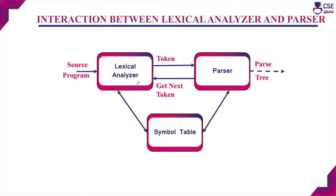Next, the interaction between the lexical analyzer and the parser. The lexical analyzer accepts the source program, reads input characters, groups them into lexims, and produces tokens by comparing lexims with patterns. The parser sends a call — 'get next token' — to the lexical analyzer. Once the lexical analyzer receives this call, it sends its produced token to the parser. This continues as a continuous process until the complete source program is processed. Once the parser gets the token stream, it starts to construct the parse tree as output.